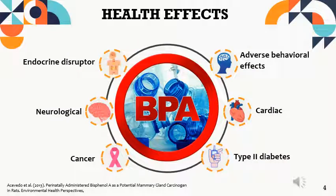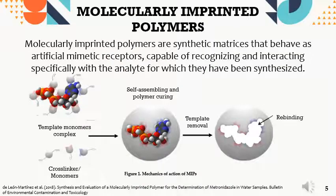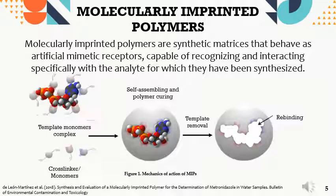Moving on to the negative effects on human health, this compound causes endocrine disruption, alteration in human behavior, neurological damage, cardiac damage, promotes cancer, and type 2 diabetes. Knowing that this compound is highly toxic and is found in several containers of human food and has also been found in water samples, both potable and residual, techniques and materials are required for the detection, quantification, elimination, and degradation of these types of compounds.